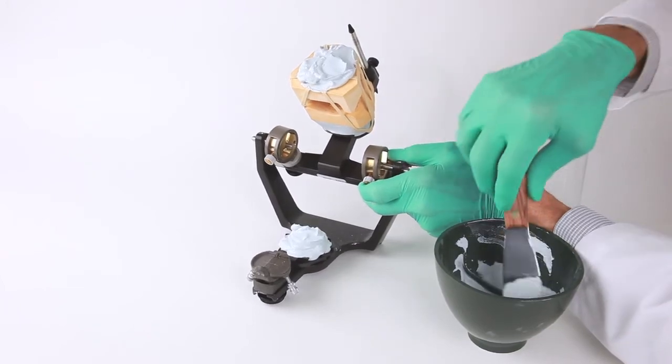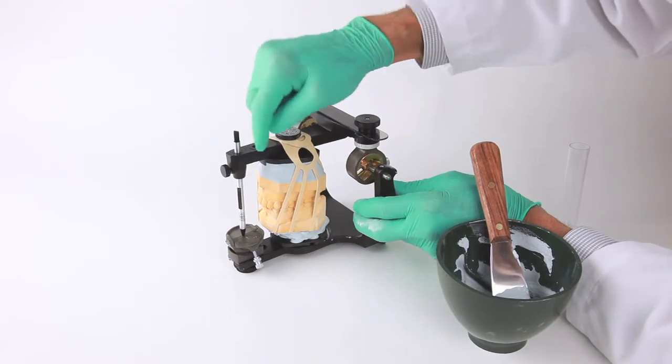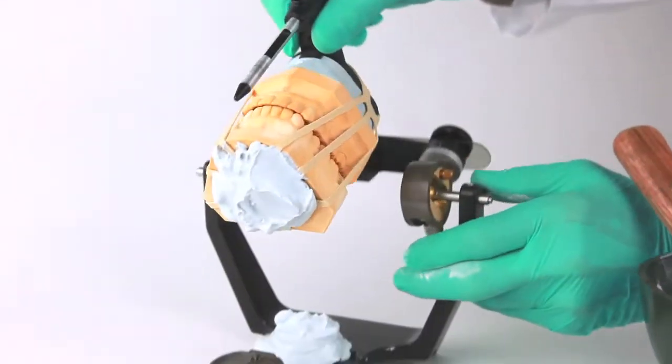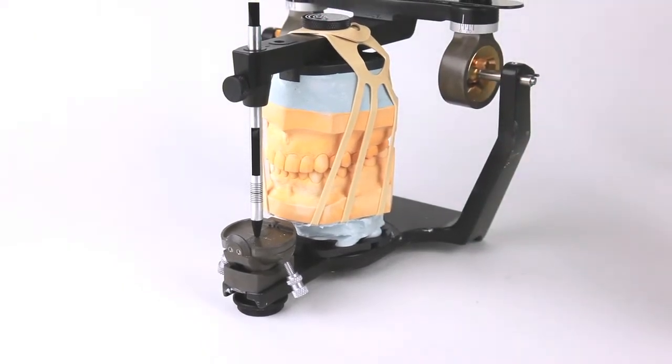Once an adequate amount of mounting stone is in place, the articulator arm is then closed. Light tapping on the upper articulator arm is recommended to make sure the incisal pin is seated on the incisal guide table.